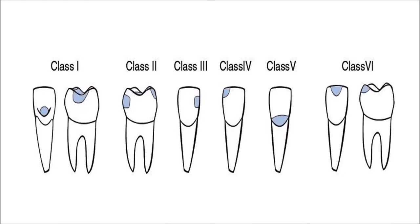When we classify caries, we classify into cavity preparations. Class 1 is on the surface of the tooth or the back surface, especially in anterior teeth. Class 2 is between the teeth in posterior teeth. Class 3 is decay between the front teeth. Class 4 is when it knocks off the incisal edge. Class 5 is when it occurs on the neck of the tooth. And class 6 is in any other areas not previously mentioned.